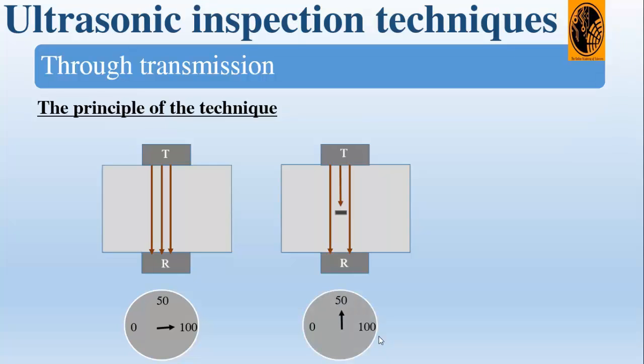If the flaw is bigger than the probe diameter, then no signal will be received by the receiver.